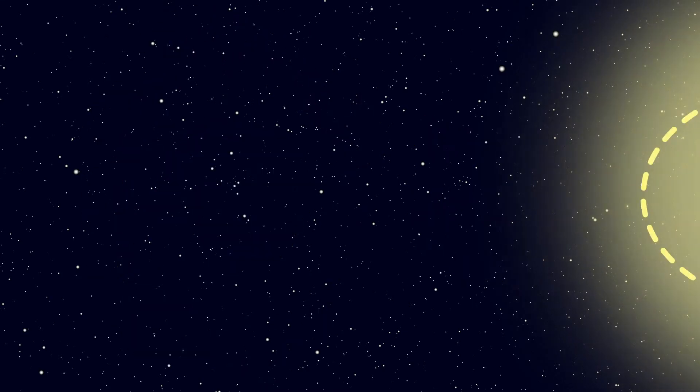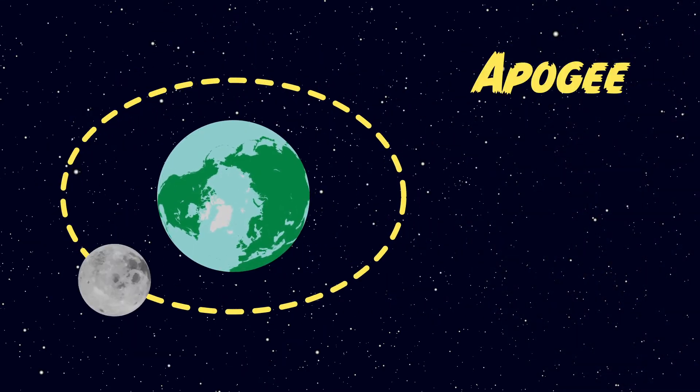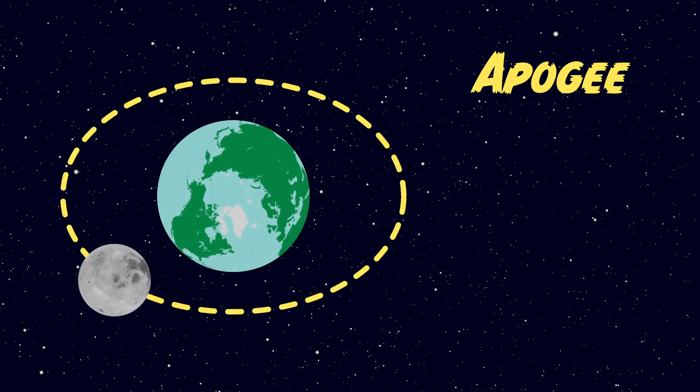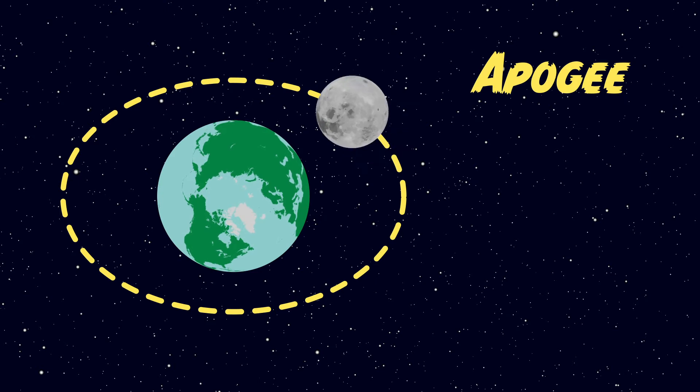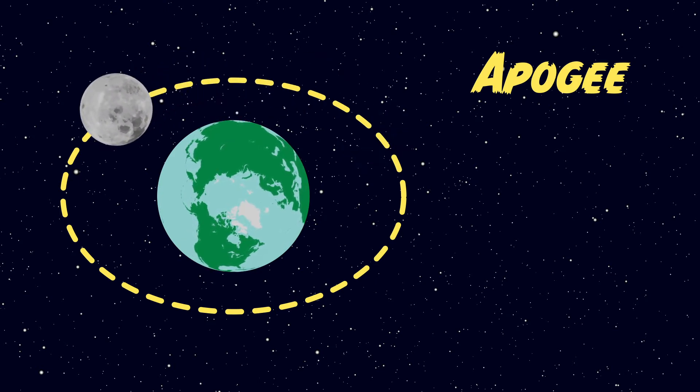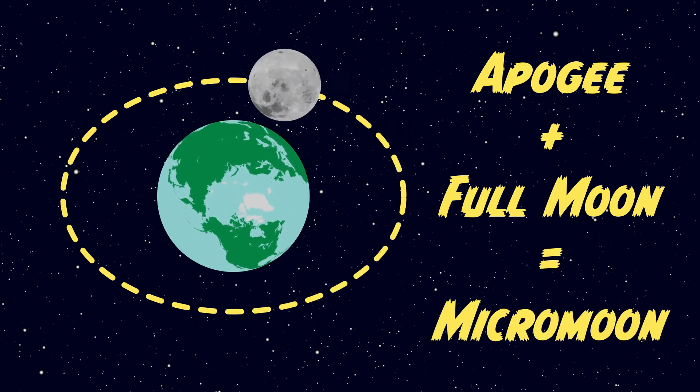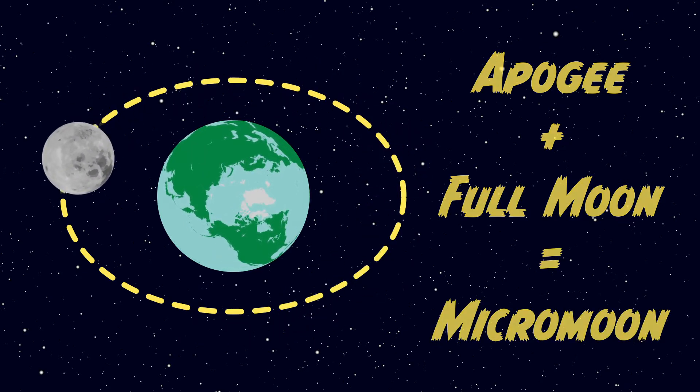When the moon is farthest from the earth it is said to be at its apogee. At the apogee the moon will appear its smallest in the sky because it's at the furthest point away from the earth in its orbit. When the apogee lines up with the full moon, this is called a micromoon because this is the smallest the moon will look.